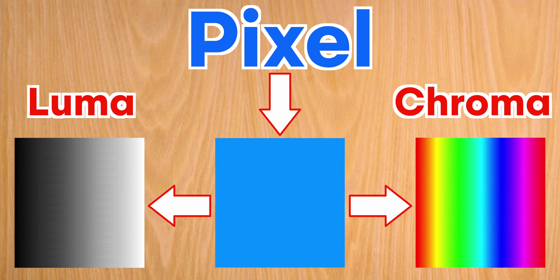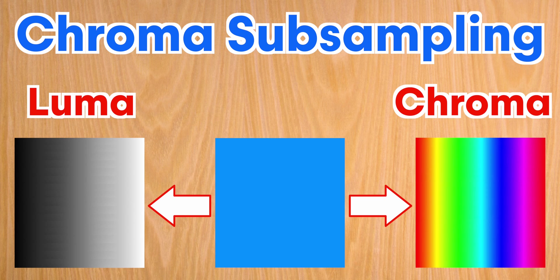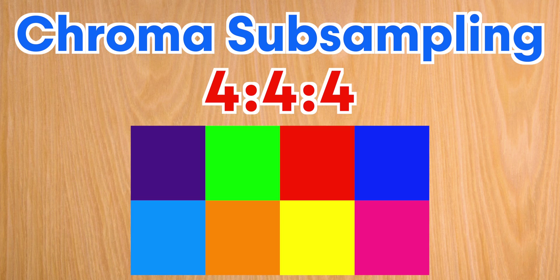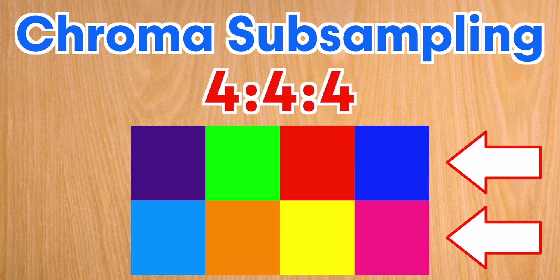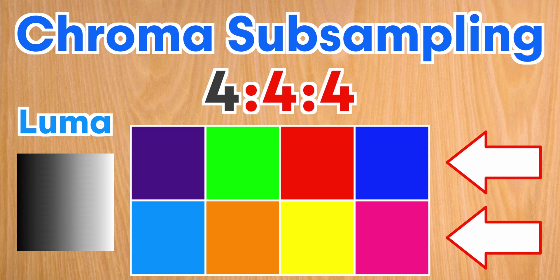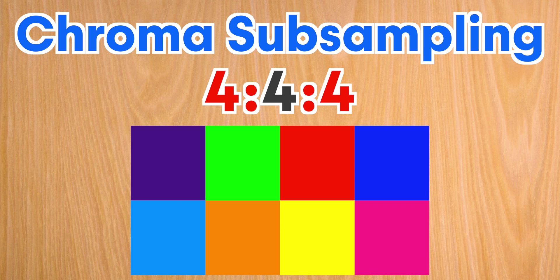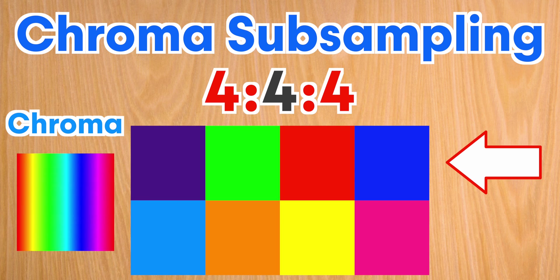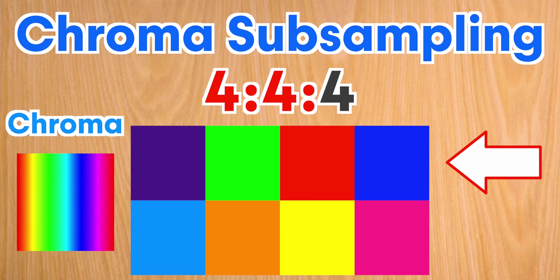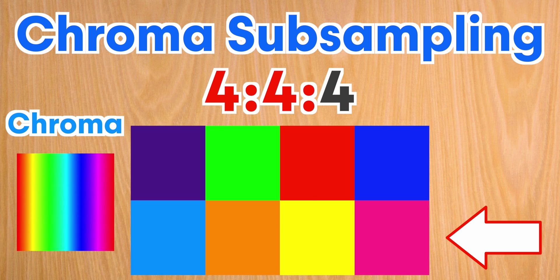When referring to how much chroma sampling is taking place, a ratio system such as 4:4:4 is used that references a block of 8 pixels arranged in 2 horizontal rows of 4. The first number indicates the number of pixels with luma information. The luma value of every pixel in both rows is recorded, as represented by the 4. The second number tells you how many pixels in the top row will have chroma information — in this case all 4 — and the third 4 refers to the chroma information recorded on the bottom row, which is also all 4.